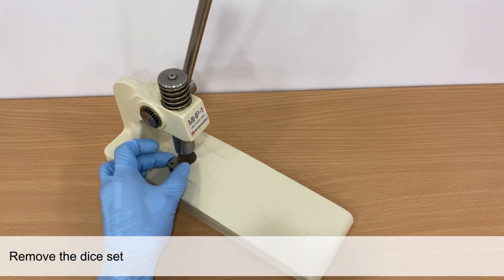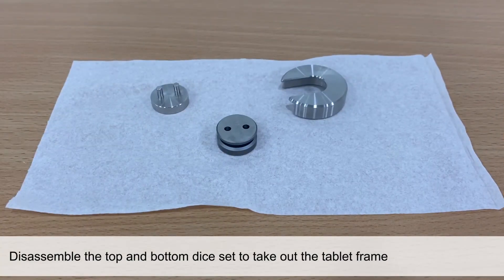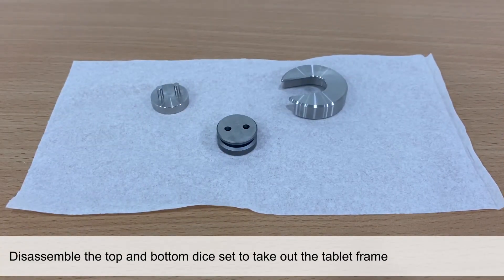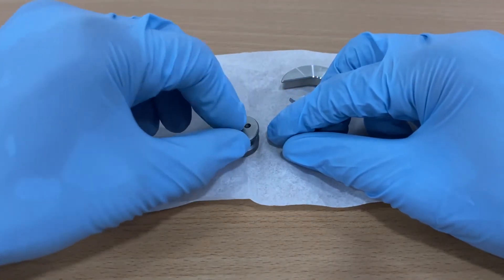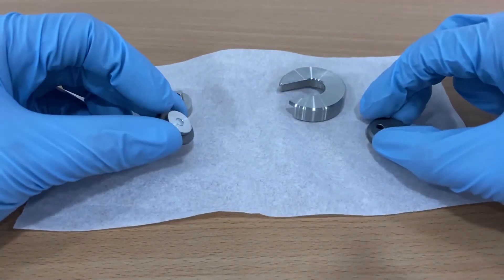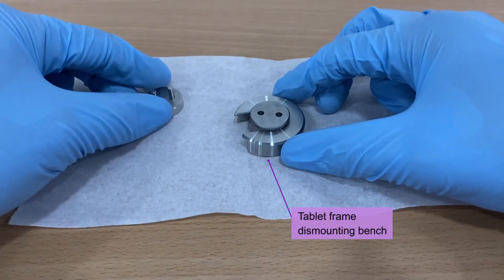Remove the dice set from the mini hand press. You can now disassemble the top and bottom dice set to take out the tablet frame. This can be done using the tablet frame dismounting bench and tablet frame dismounting tool.